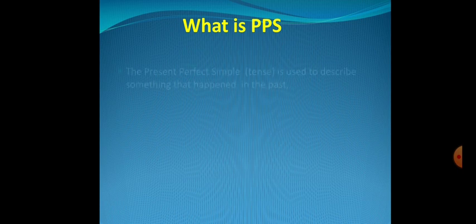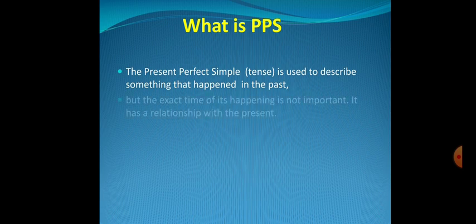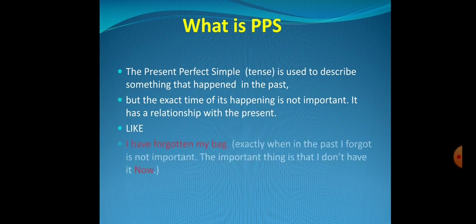Present perfect simple tense is used to describe something that happened in the past, but the exact time of the happening is not important. It has a relationship with the present. Like I have forgotten my bag, exactly when in the past I forgot is not important. The important thing is that I don't have it now.